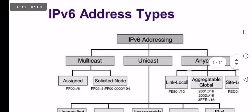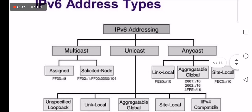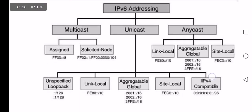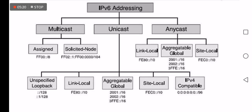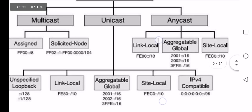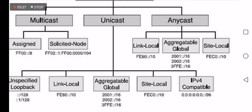IPv6 is classified into three major types: unicast, multicast, and anycast. Our focus will be on unicast addressing, including link-local addresses starting with FE80, and global unicast addresses starting with 2001 slash 16 to 3FFE slash 16, as examples of aggregation global unicast addresses. Thank you for watching this part of the video.